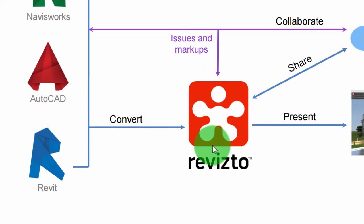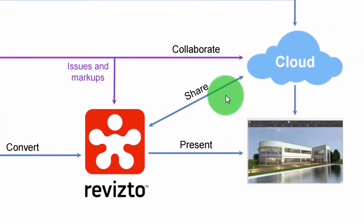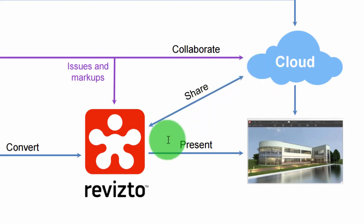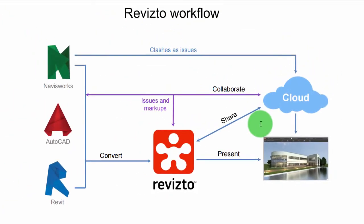Once it's pushed out to Revisto from Navisworks, we're going to share that to the cloud and invite our team members. Those team members are going to pull the Revisto file — because your Navisworks file is not going to the cloud — down to their local machine. They're then going to go back into Navisworks, AutoCAD, or Revit, whatever program they're technical in, and link that specific Revisto file that they pulled from the cloud to their local project.